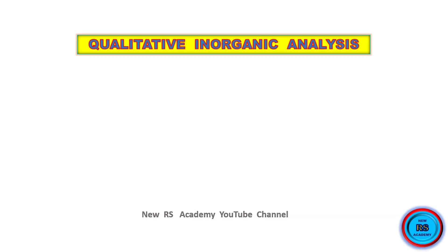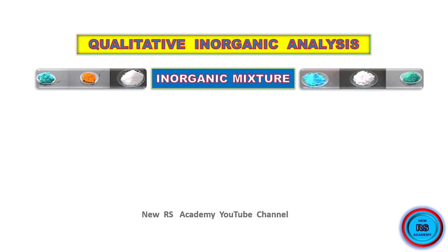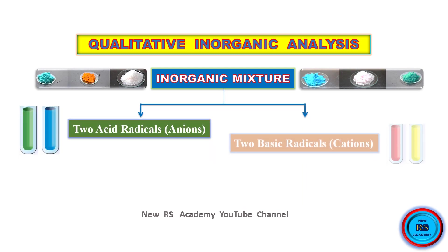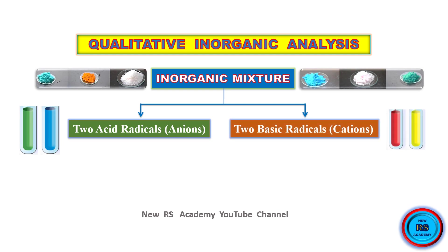Hi guys, welcome to RS Academy YouTube channel. In this session, we will discuss about qualitative inorganic analysis. The given inorganic mixture contains two parts. One is two acid radicals, another one is two basic radicals. Acid radicals are called anions, basic radicals are called cations.